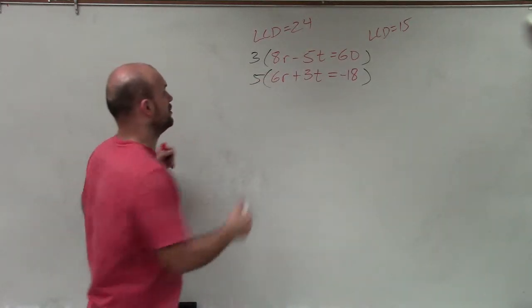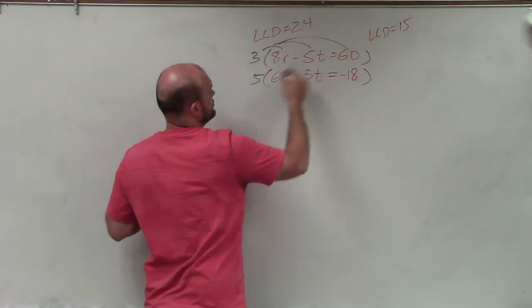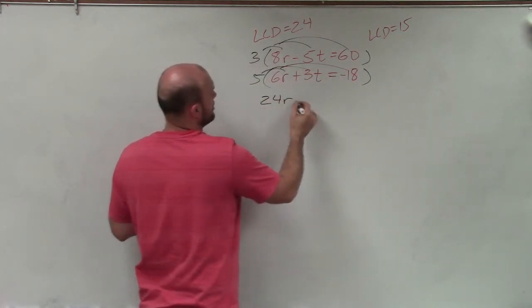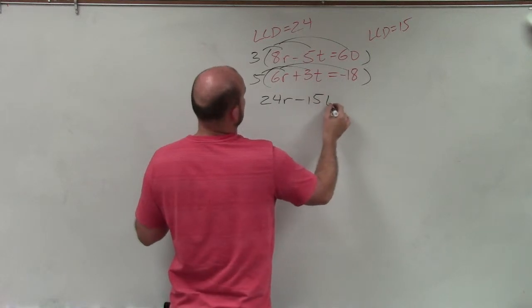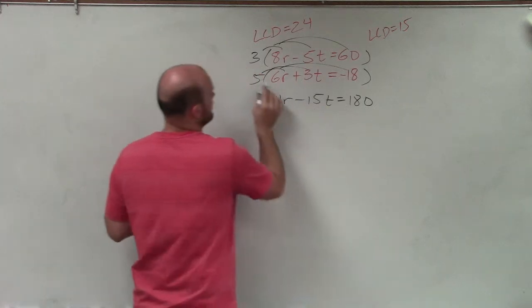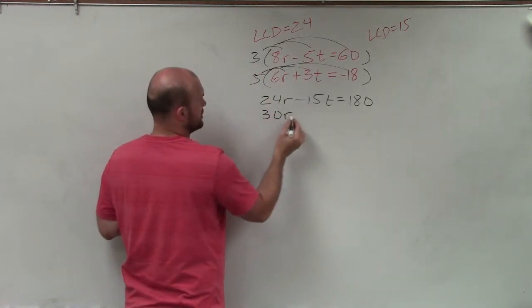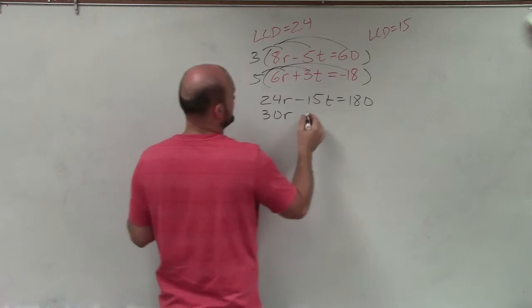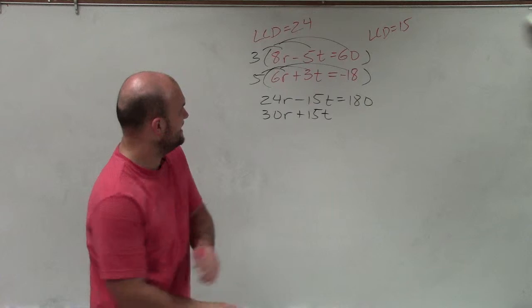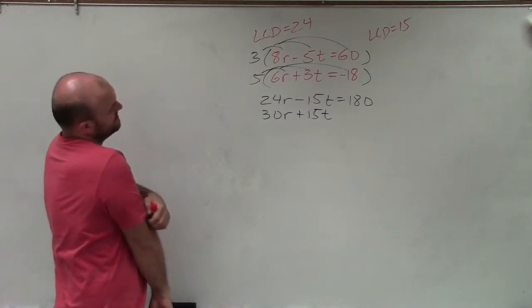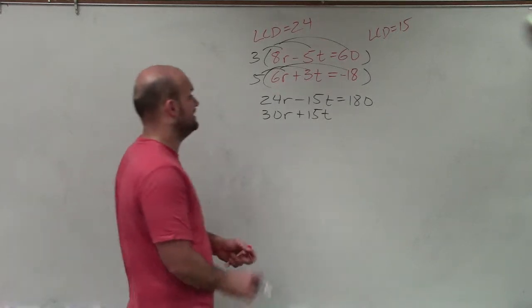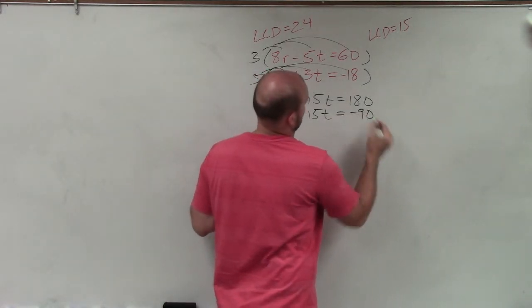So now I'll simply just multiply across by applying distributive property. So 3 times 8 is going to be 24r minus 15t equals 180. 5 times 6r is going to be 30r. 5 times 3t is going to be a positive 15t. And 5 times negative 18 or 5 times 18 is going to be 36, 72, 80, 90.